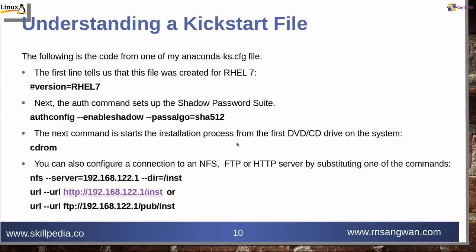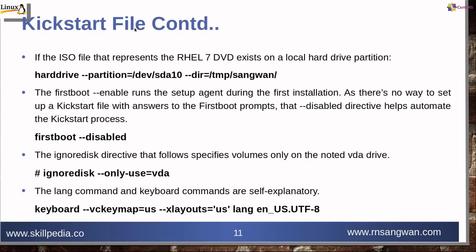The next command starts the installation process from the first DVD or CD-ROM on the system. In my case I used URL — that is an HTTP-based URL. If you configure an NFS server, you can specify nfs with --dir=/inst. If using an FTP server, specify the FTP server URL. If the ISO file representing the RHEL DVD exists on a local hard drive partition, you can specify harddrive --partition=/dev/sda10 and the directory.